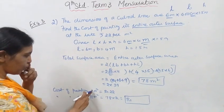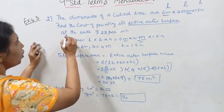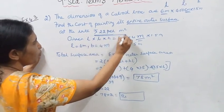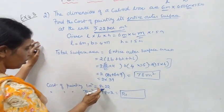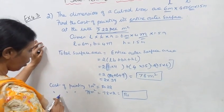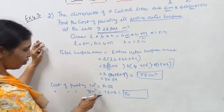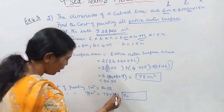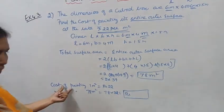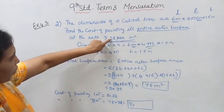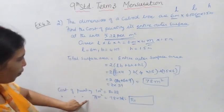Now for cost of painting, 1 meter square is 22 rupees. So cost of painting 78 meters square is 78 into 22.